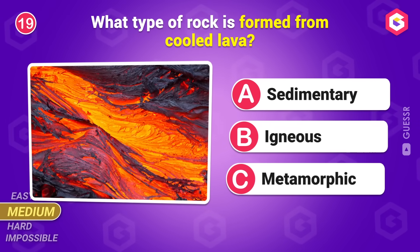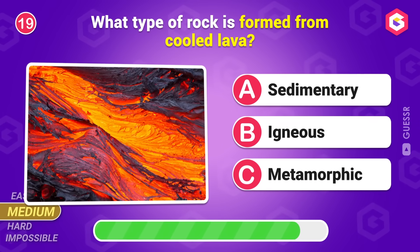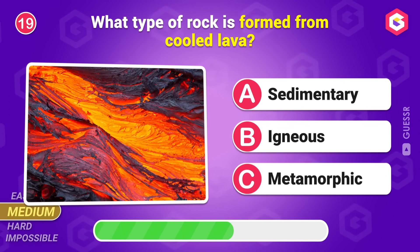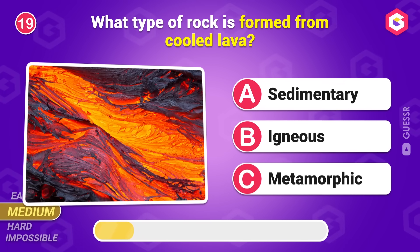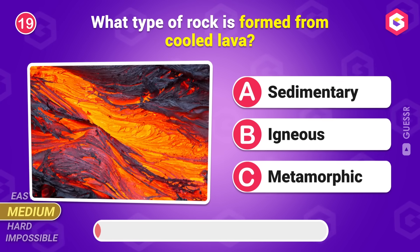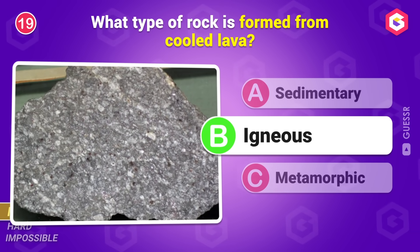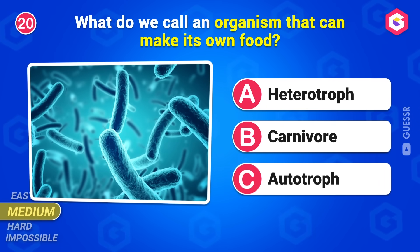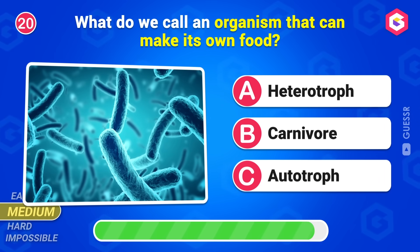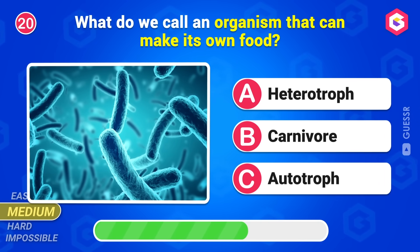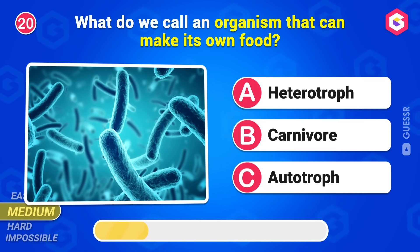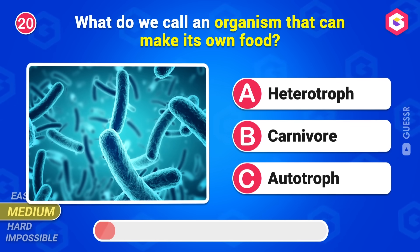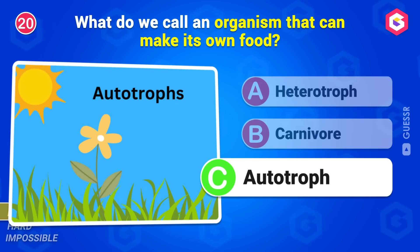What type of rock is formed from cooled lava? Igneous rock. What do we call an organism that can make its own food? Autotroph.